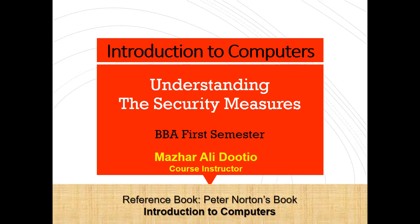Confidentiality ensures that data is accessed only by authorized individuals. Integrity ensures that information is reliable as well as accurate. Availability ensures that data is both available and accessible to satisfy business needs. The concept behind computer security is to provide security to computer hardware, computer data, and computer networks.